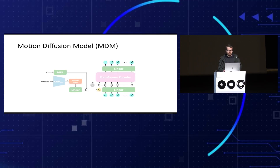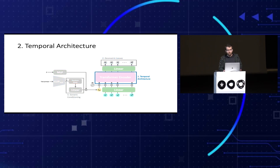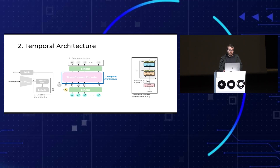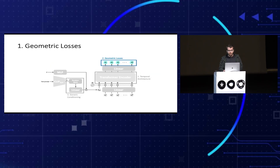This is MDM, and we understand it through three features that adapt diffusion to the motion domain: temporal architecture, geometric losses, and generic conditioning. Since we deal with temporal data, we need a temporal architecture. We use a transformer encoder that takes noisy motion as input and outputs the denoised version, where each token in the sequence represents a single frame of motion.